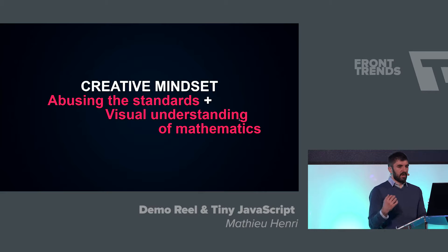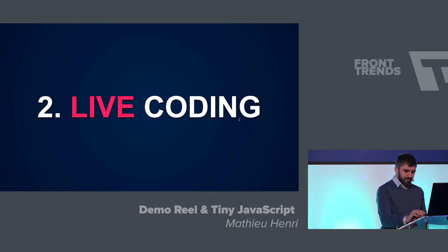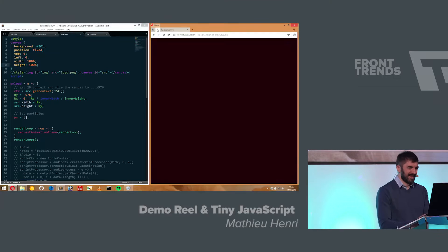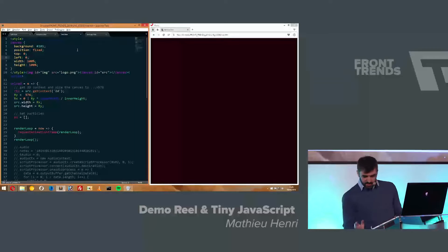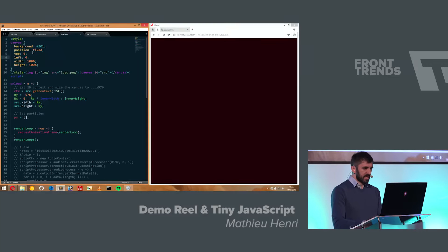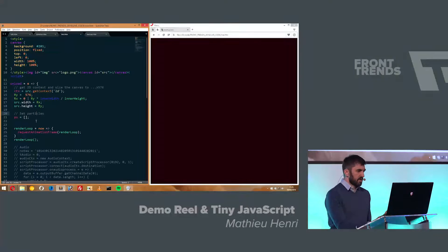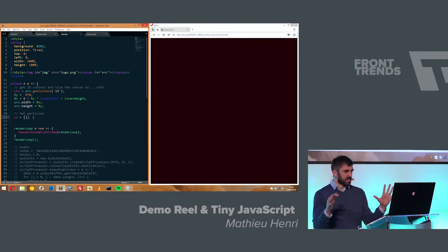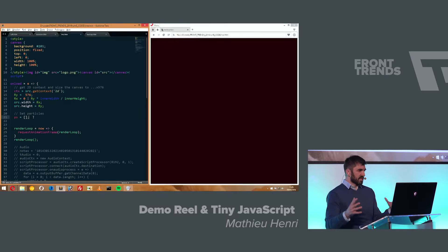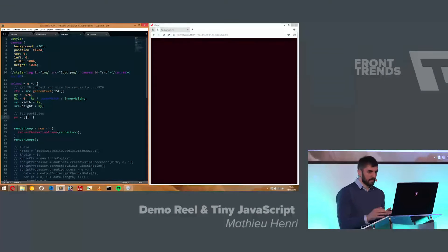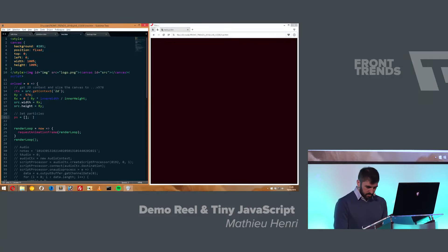To sum it up, it's about having a creative mindset, using the standards, and getting a visual understanding of mathematics without being scared of them. Now it's time for live coding. Because I don't have so much time, I prepared a bit of boilerplate. At the top we have a canvas set to full size. We load an image and on load we get the context, set the canvas height to 576, respect the aspect ratio, and we have a small render loop. Today I'd like to do some particles that follow a vector field — like the wind arrows you see on weather forecast maps — with a bit of sound, playing with the Fronten logo.